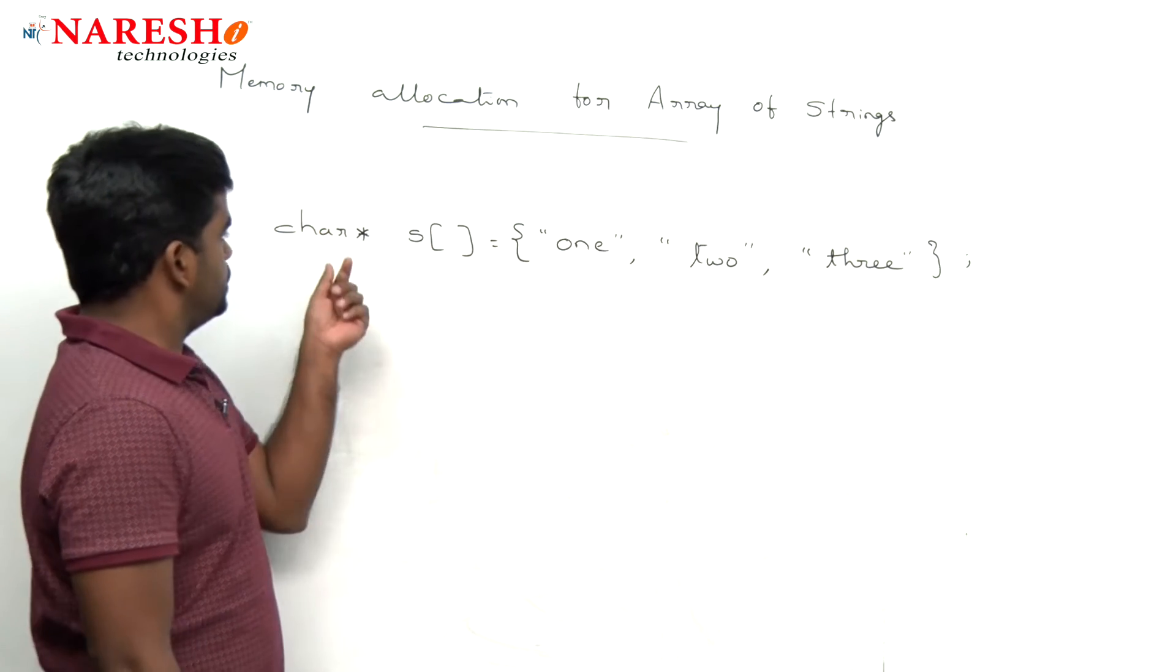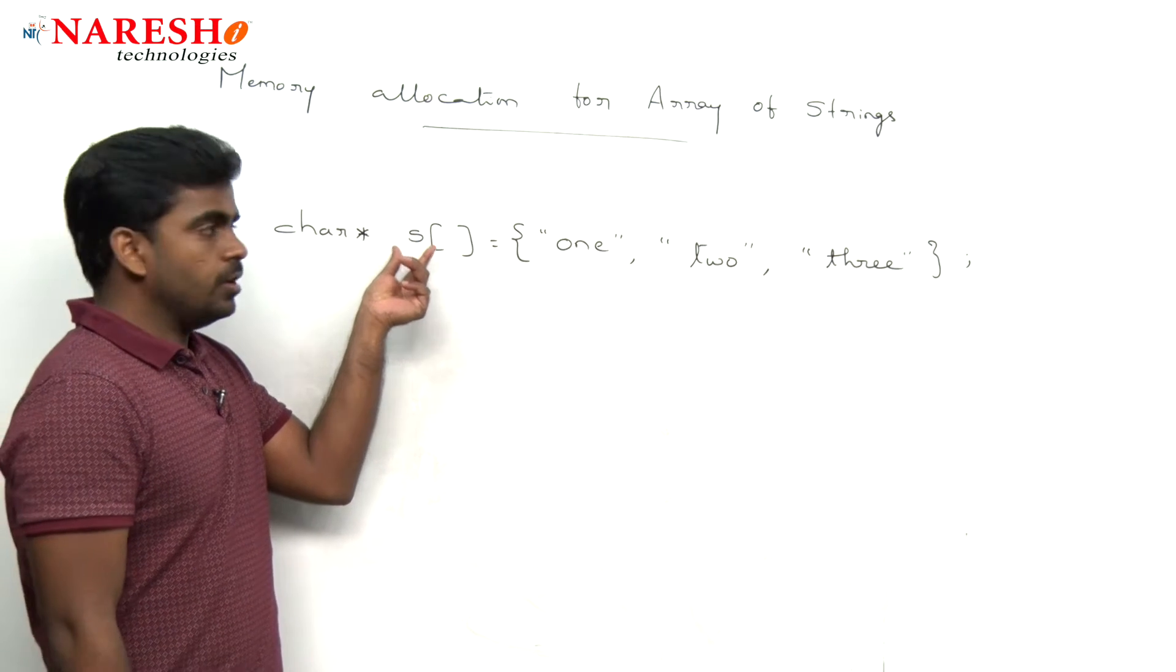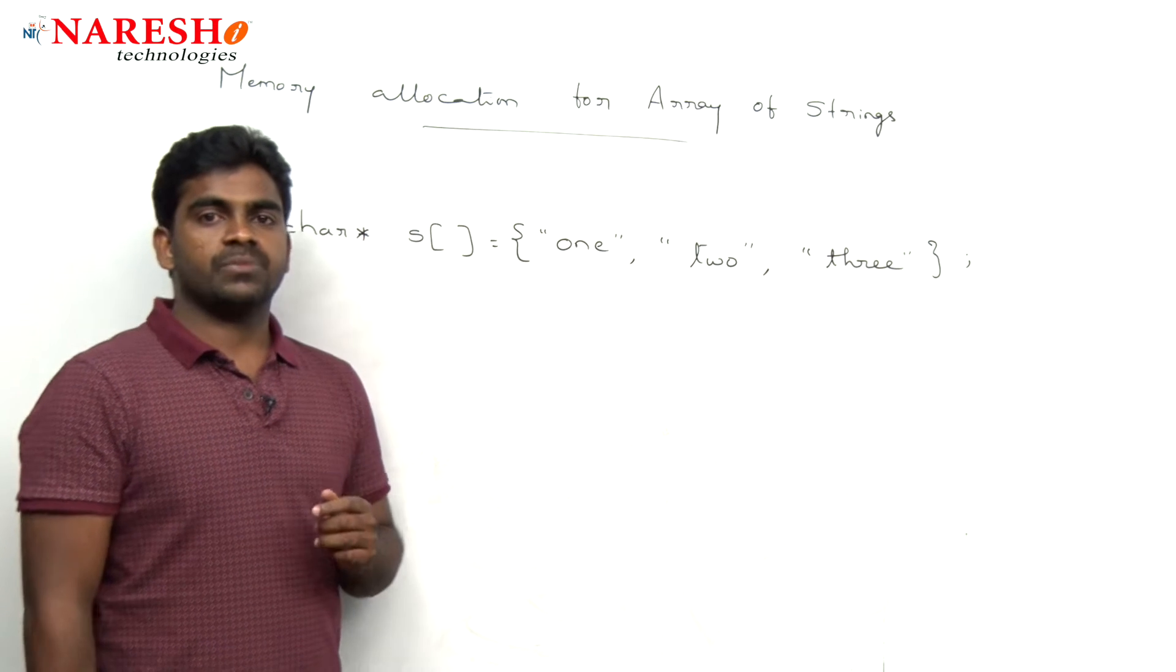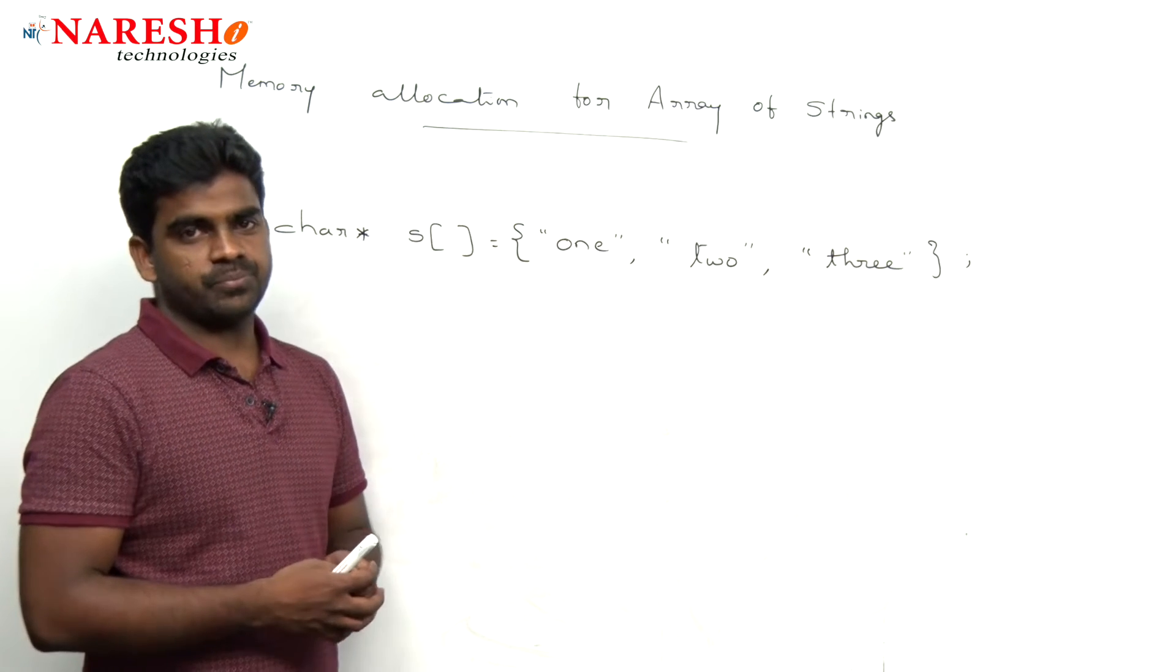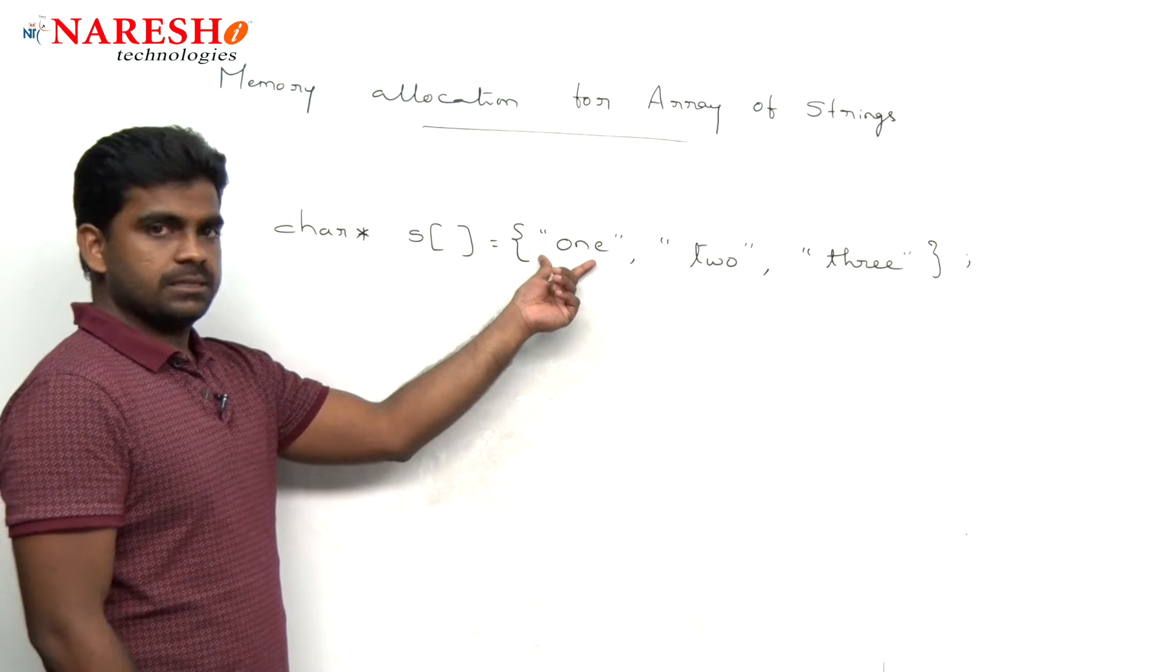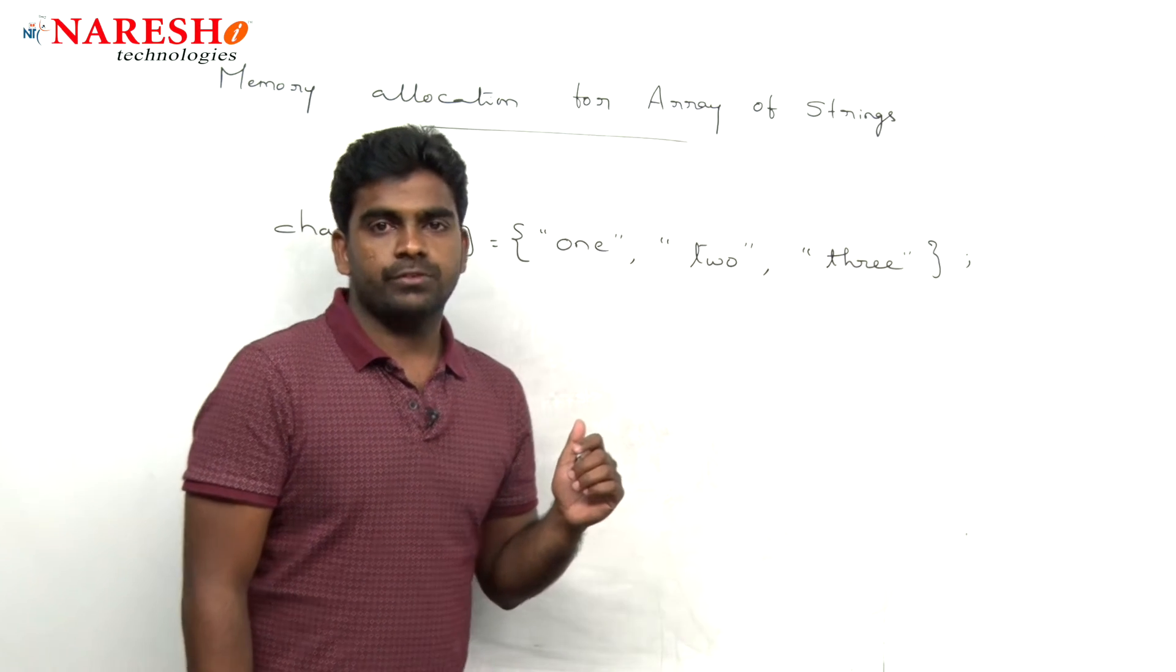Here, we are taking a character pointer. An array of type is character pointer type. The character pointer can point to a string. The elements in that array, we are taking a few strings.